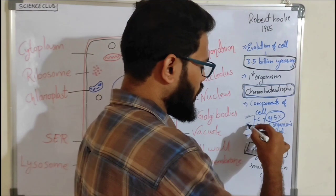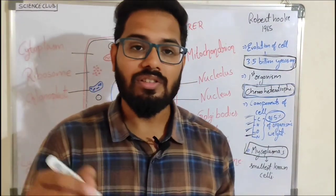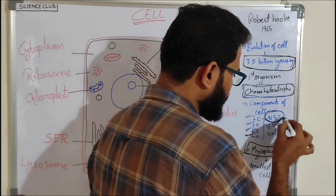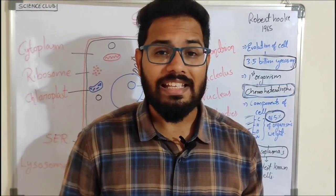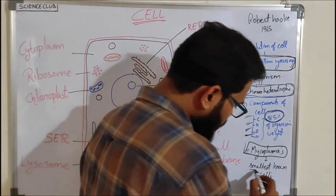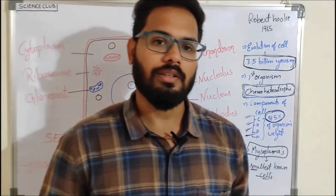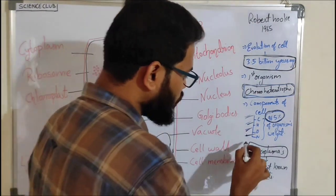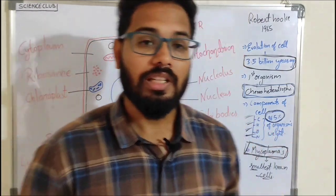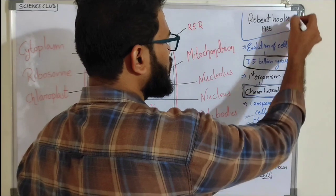What are the components of the cell? The components of the cell are carbon, hydrogen, oxygen, and nitrogen, which make up the organism's weight up to 96.5 percent. And what are the smallest known cells? The smallest known cells are mycoplasmas.